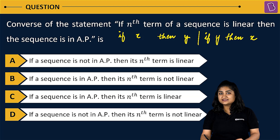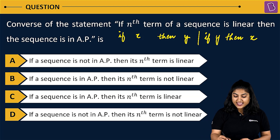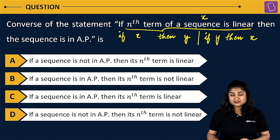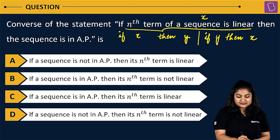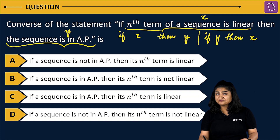So here, what is X and what is Y? X is 'the nth term of a sequence is linear', and Y is 'the sequence is in AP'.